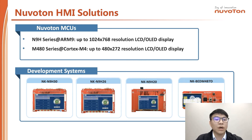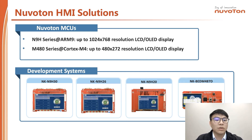The second is the M480 series, with a Cortex-M4 core speed up to 192 MHz, supporting up to 480 by 272 resolution display — this is a mid-range solution. The third core is M0, with a core speed up to 72 MHz. This is a low-end solution, and we are preparing the evaluation board and documentation, which will be coming soon.